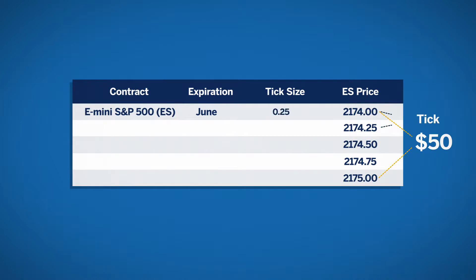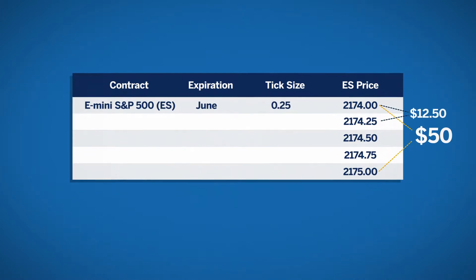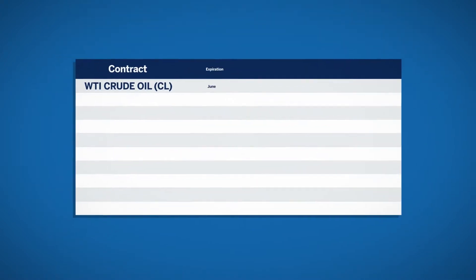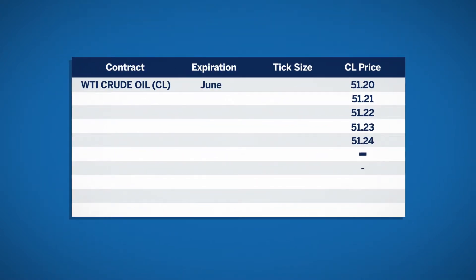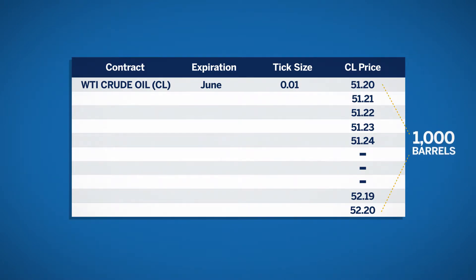a movement of one tick would equal 0.25 times $50, or be equal to $12.50. The tick size of the NYMEX WTI crude oil contract is equal to one cent. The WTI contract unit is 1,000 barrels, so the value of a one tick move is $10.